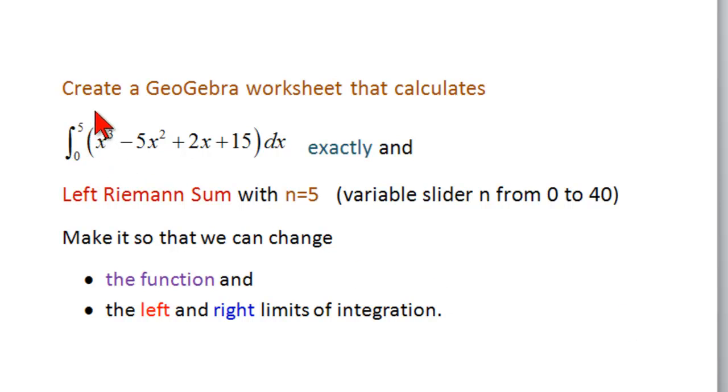In this screencast, we're going to show how to create a GeoGebra worksheet that calculates the integral from 0 to 5 of x cubed minus 5x squared plus 2x plus 15, exactly, and using left Riemann sums with n equal to 5. We're going to have a variable slider because that's very easy to do, and we're going to make it so that we can change the function and the left and right limits of integration, but in a very basic way.